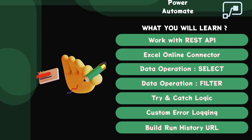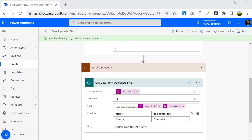Hello guys, welcome back. In this session we are going to look into the Excel Online connector within the project we have been building over the last two sessions — an Excel uploader tool. So far we have developed trigger functionality where the user uploads an Excel file inside the document library and we extract the details of that file. Now it's time to build the functionality to extract data from the uploaded Excel worksheet using the Excel Online connector. Let's jump into the Power Automate portal.